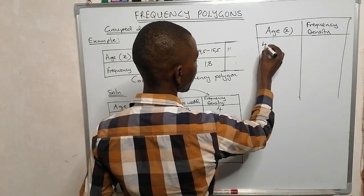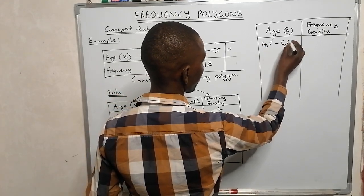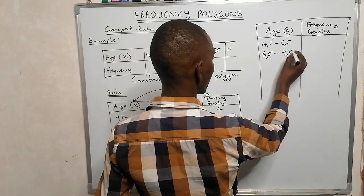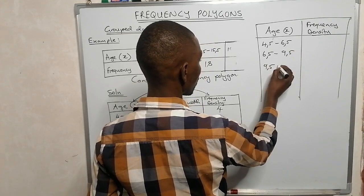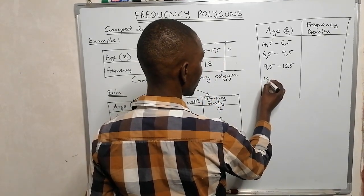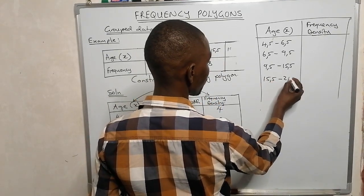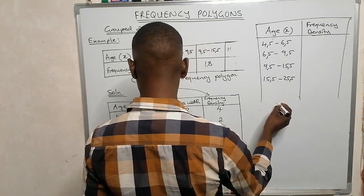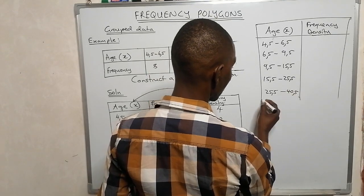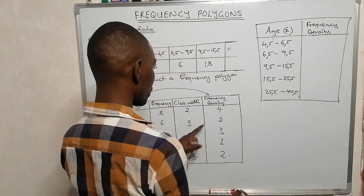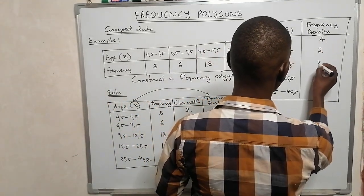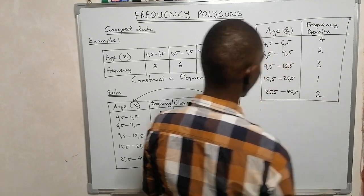For the x-axis (age), we have: 4.5–6.5, 6.5–9.5, 9.5–15.5, 15.5–25.5, and 25.5–40.5. For the y-axis (frequency density), the values are: 4, 2, 3, 1, and 2.